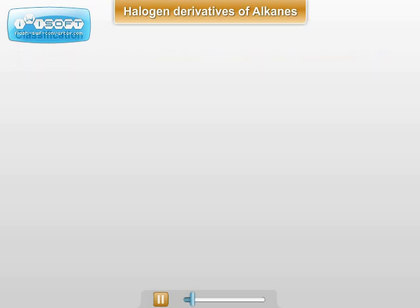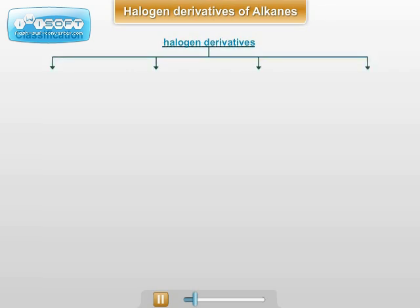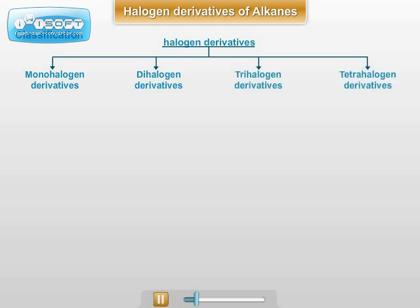Classification: Depending upon the number of halogen atoms present in the compound, Halogen Derivatives of Alkanes are classified as Mono, Di, Tri, Tetrahalogen Derivatives, etc.